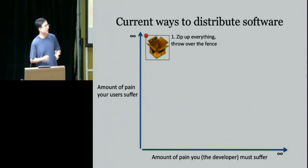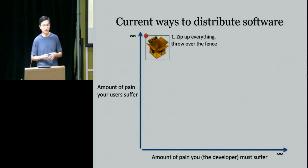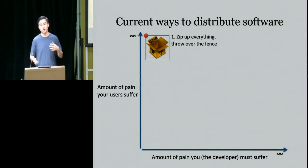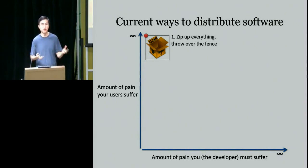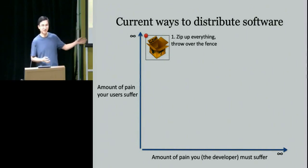This might seem like a strawman example, but it's what happens in the scientific and research world all the time. Scientists hacking on climate analysis scripts with data files and Python mixed with some C code — when a colleague says 'I love your paper, can I get your code?' you zip it up and give it to them. The chances of them actually being able to run it out of the box are pretty low.